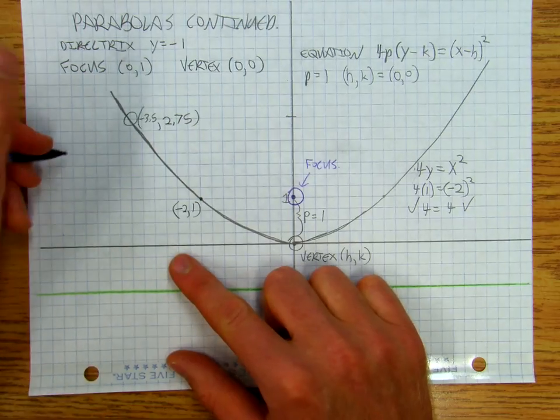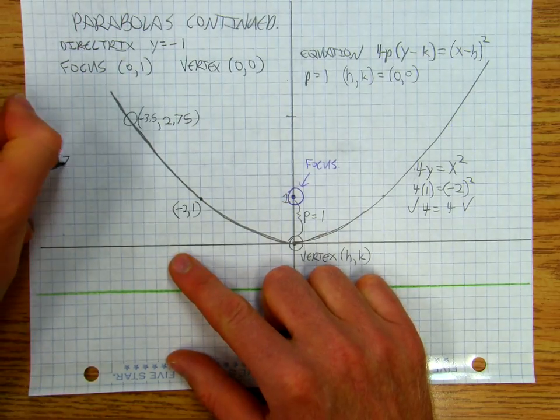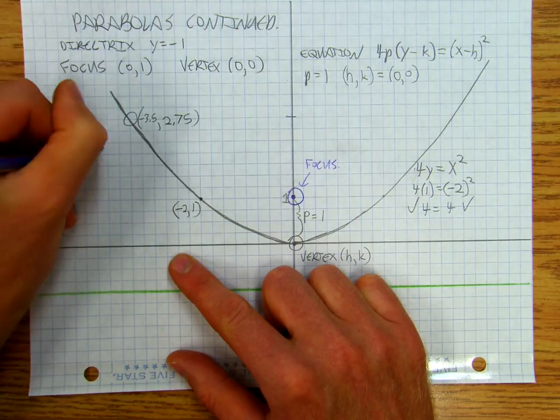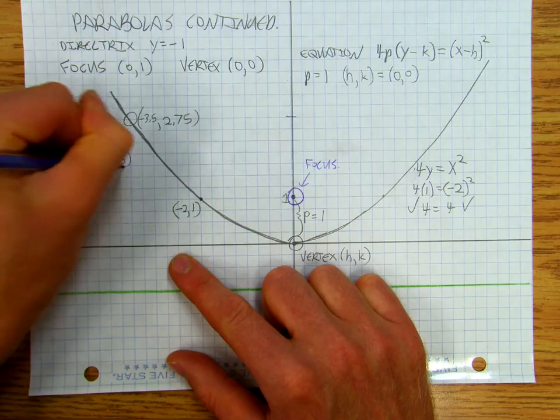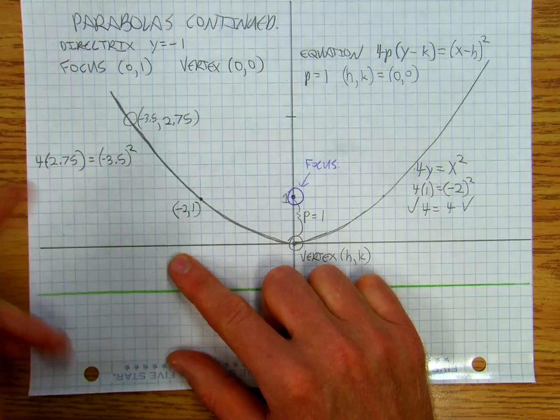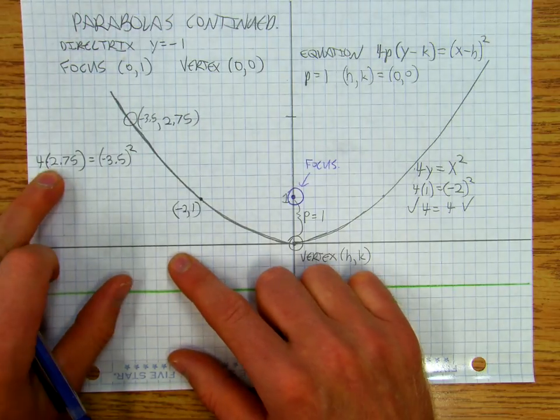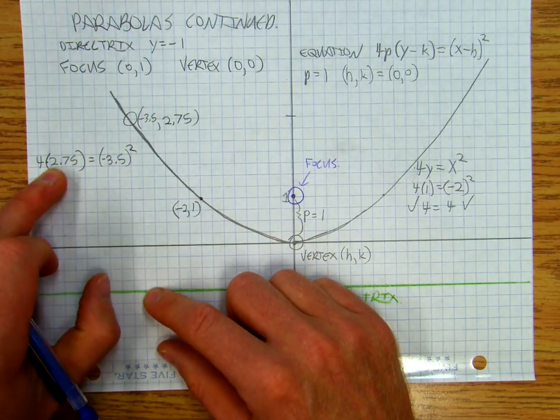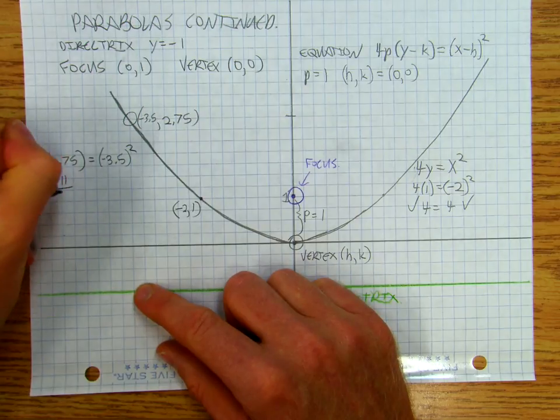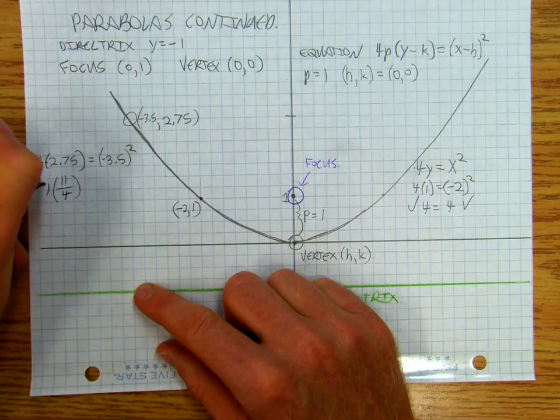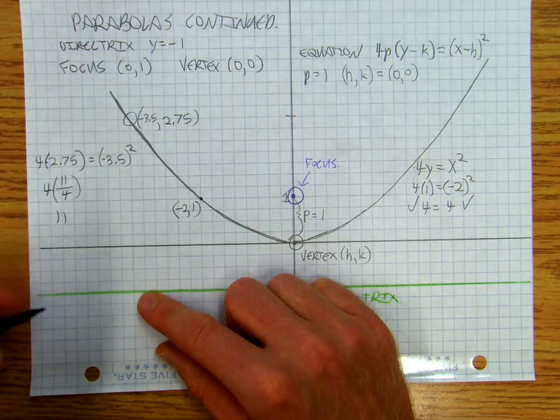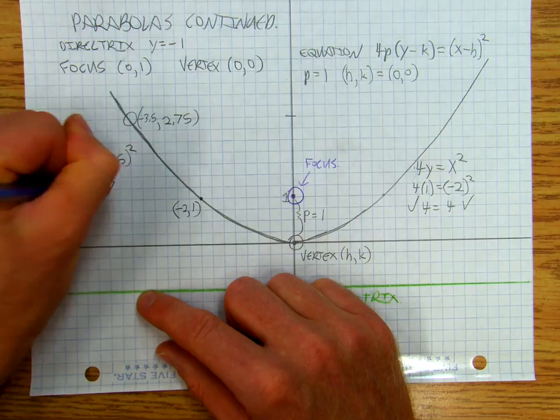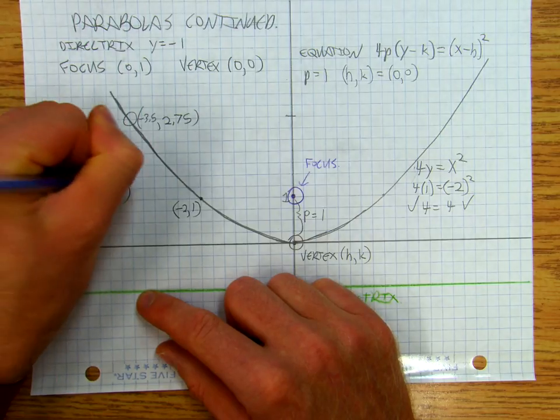Okay. So now I do 2.75, 4 times 2.75 is equal to negative 3.5 squared. Well, let's put these as fractions. So that's going to be 2.75 is going to be 8 fourths plus 3 fourths, so that's going to be 11 fourths times 4 equals 11,